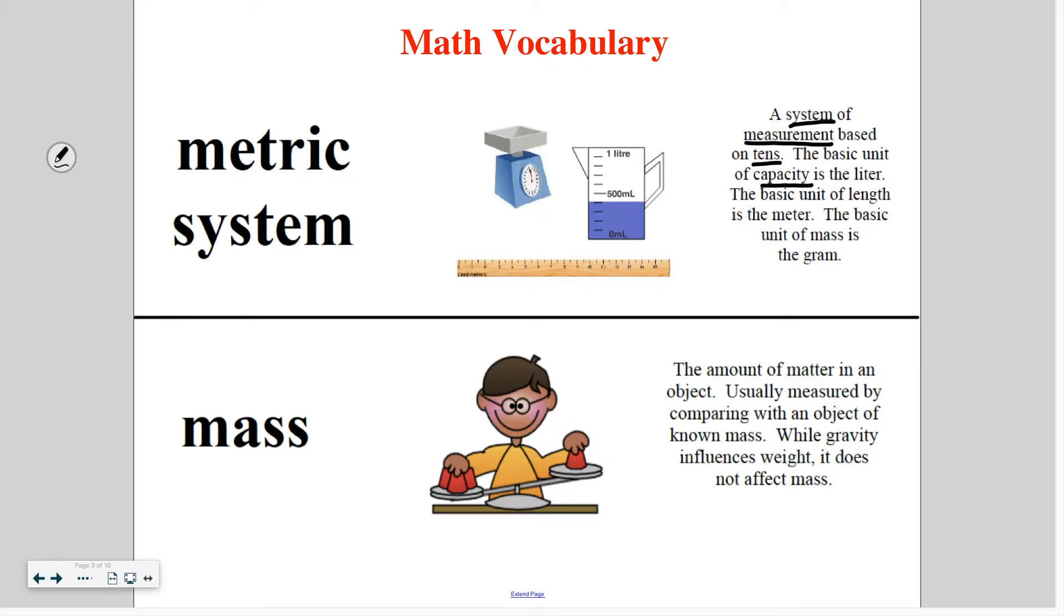So for capacity, especially when we're using, generally for liquids, like you see here, this water, the basic unit is the liter. For length, the basic unit is the meter. And then for mass, the basic unit is the gram.